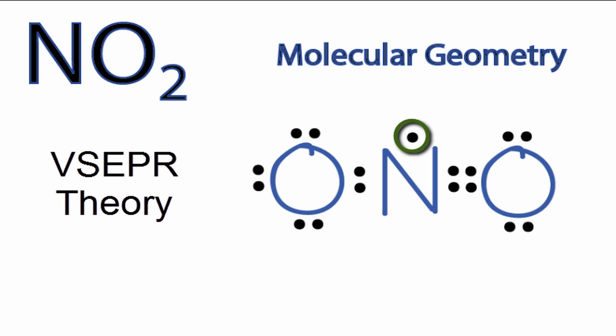According to valence shell electron pair repulsion theory, all of those things are going to push away. The oxygens are going to push away from each other, as is that one electron. So it's not going to be a linear molecule.